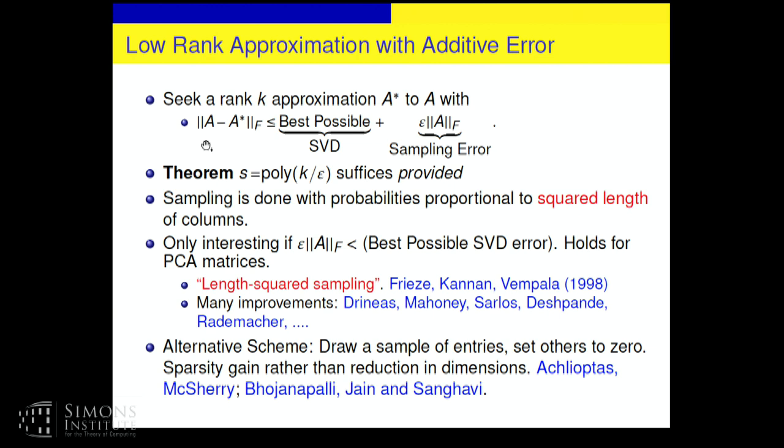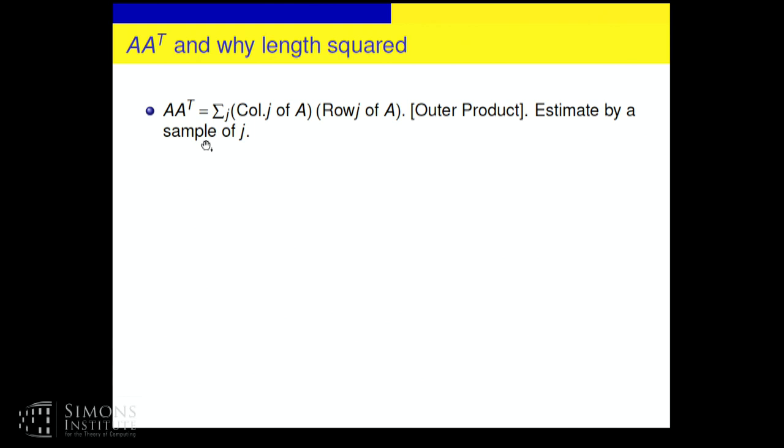There's an alternative scheme. You could draw instead a sample of entries and set other entries to zero. So you could sparsify the matrix, but keep the dimensions. I won't talk much about it. This is some work of Achlioptas and McSherry. And some follow-up work has happened on that as well. But I will just draw whole columns.